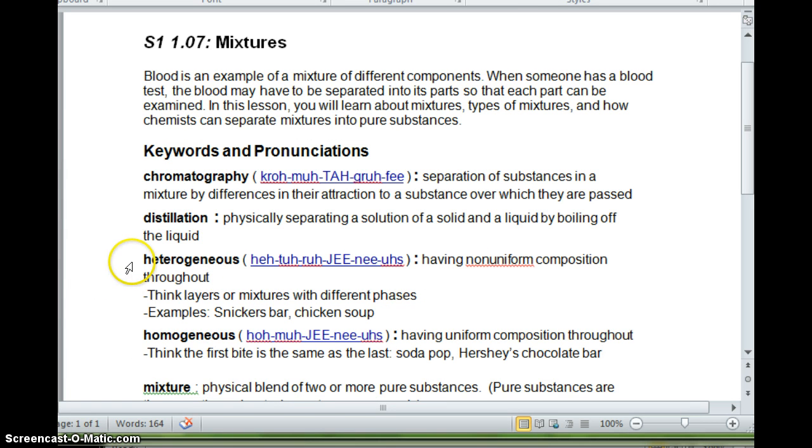So I added to our notes, when you think of heterogeneous, think layers or mixtures with different phases, example, Snickers bars or chicken soup. Homogenous is uniform composition throughout. Think the first bite is the same as last. So soda pop, Hershey's chocolate bars. Now obviously, they're going to be giving you chemicals as well, which you would never eat, but you can still think about it the same. Is it the same everywhere? Homogenous or is it different in different areas? Heterogeneous.